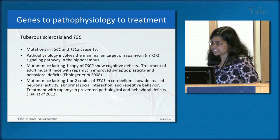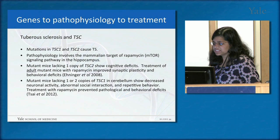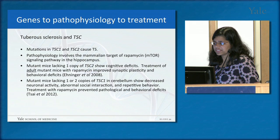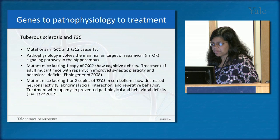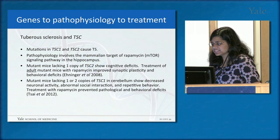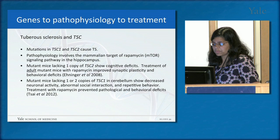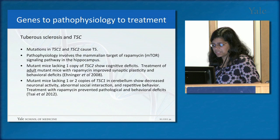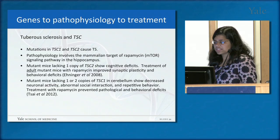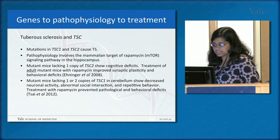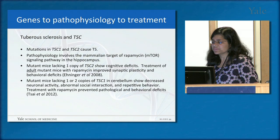A third example is tuberous sclerosis and TSC1/TSC2 genes. The pathophysiology involves a signaling pathway in the hippocampus called the mTOR pathway, or mammalian target of rapamycin. Mutant mice lacking one copy of TSC2 show cognitive deficits, and treating adult mice with rapamycin improves synaptic plasticity and behavioral deficits. Another group found that mutant mice lacking TSC1 in the cerebellum show decreased neuronal activity, abnormal social interaction, and repetitive behavior — and treating with rapamycin prevented these pathological and behavioral deficits. This is a great example of going from genes to pathophysiology to very specific treatments.